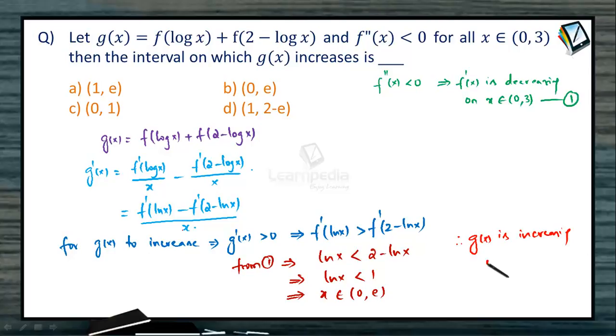Where does that option satisfy? Yes, the option presented as b, which says g(x) is increasing on (0, e), would be the correct choice.